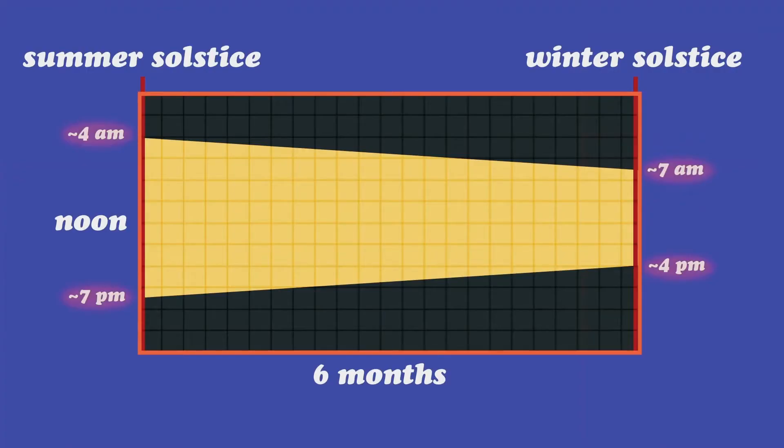Hey, do you notice something about the sunrise and sunset times for the solstices? They're opposites. Yeah, that's not accidental. That's a pattern. Science loves patterns.